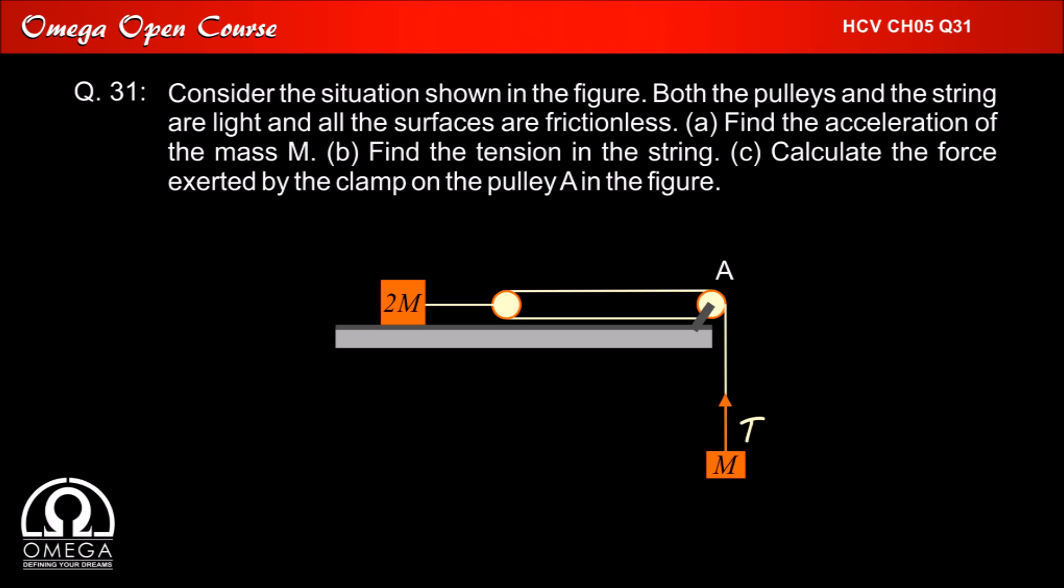Let us assume that the tension in the string pulling the block of mass m upwards to be T. Since net force on massless pulley is always 0, the tension in the string pulling the block of mass 2m towards right is 2T.